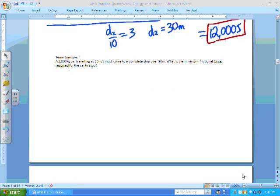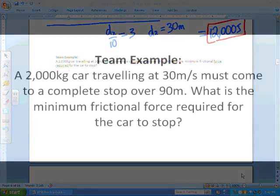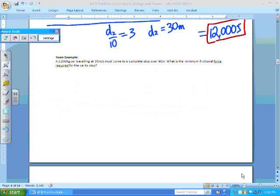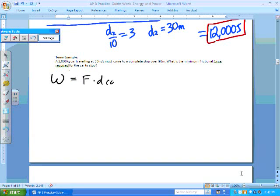Now you try one. A car traveling at 30 meters per second must come to a complete stop over 90 meters. What is the minimum frictional force required for the car to stop? Pause the video if you have to, and when you're ready to check your work, press play again.